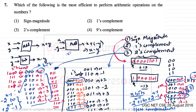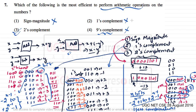The same logic also applies to nine's complement for base-10 decimal numbers. Sign-magnitude, one's complement, and nine's complement are not as efficient as two's complement, which is why we generally use two's complement as the most efficient number system for performing arithmetic operations. If you have additional reasons, please comment below so other students can benefit. Thank you — let's move on to question number 8.